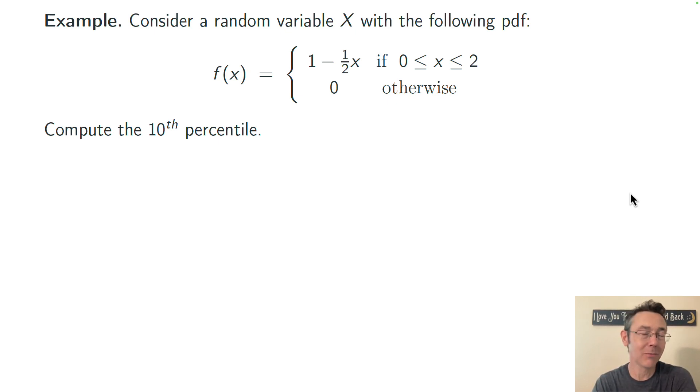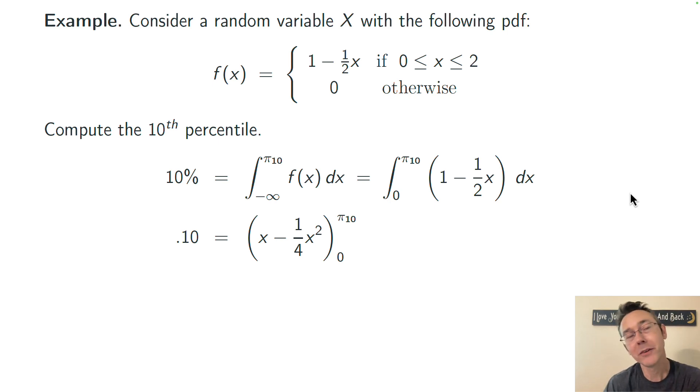And this just means plugging into that formula and solving an equation that has an integral in it. So we need to find the value π_10 such that the integral for less than that number of the density function is 10%. So instead of integrating from negative infinity to π_10, I can just go from 0 because the support doesn't start till 0. And then here I'm taking out the f(x) and putting in the equation that it's equal to. And now I'll move through the integration fairly quickly.